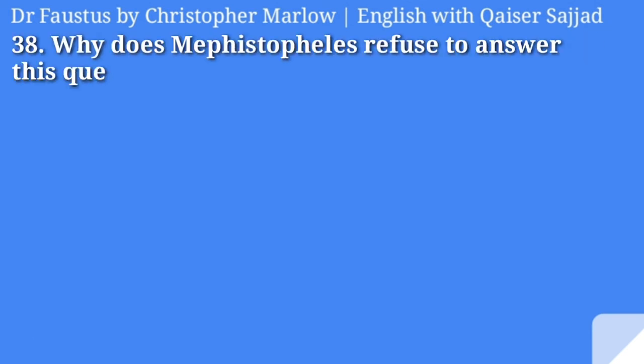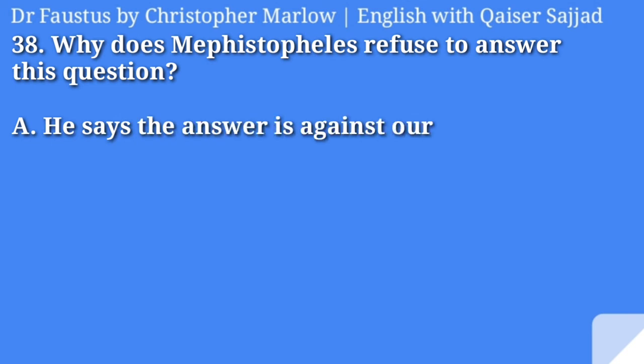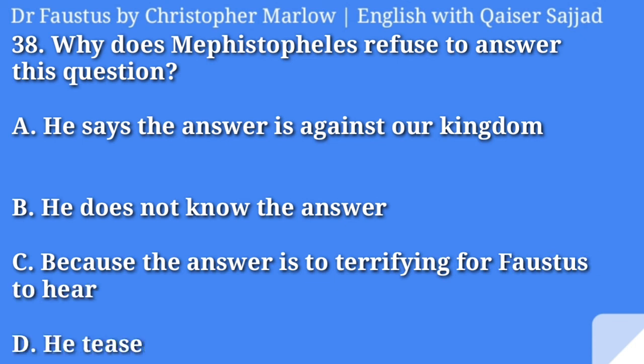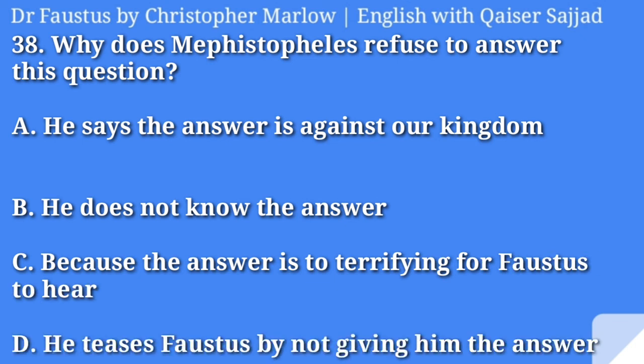Why does Mephistopheles refuse to answer this question? He says the answer is against our kingdom, he does not know the answer, because the answer is too terrifying for Faustus to hear, or he teases Faustus by not giving the answer. Answer is option A, he says the answer is against our kingdom.